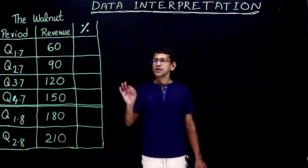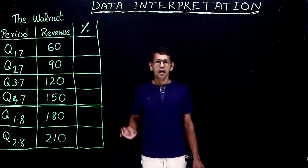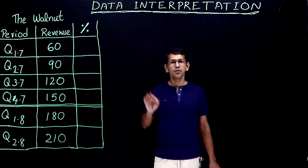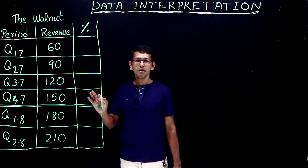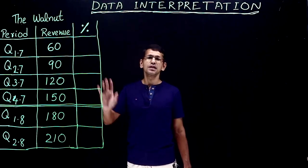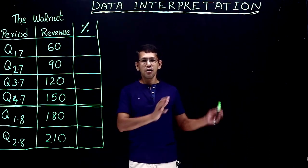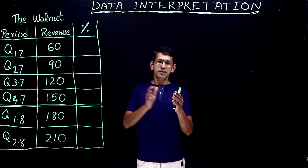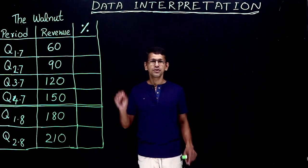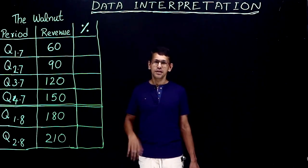Usually when you get a table format data, most of the time — about 70% of the time in data interpretation — the questions are dealing with percentages. It doesn't matter if it's a table format, a pie chart, a histogram, or any kind of chart, even a line chart. Most of the time the data would be dealing with percentages.